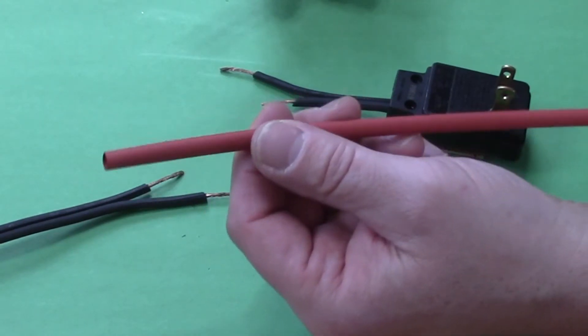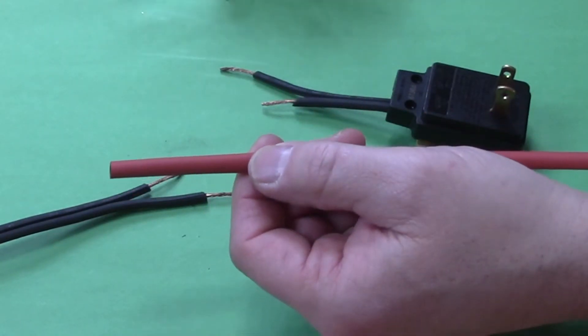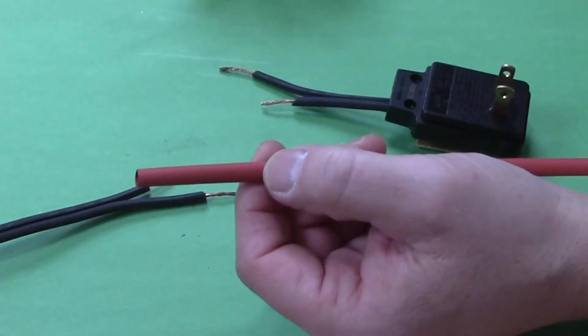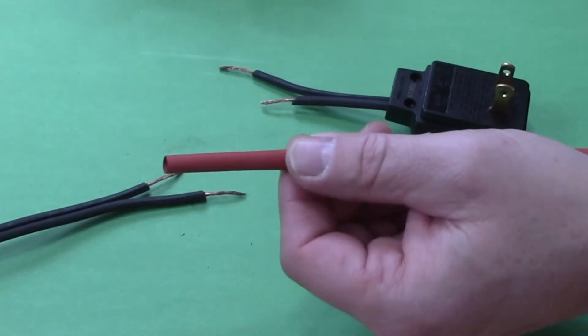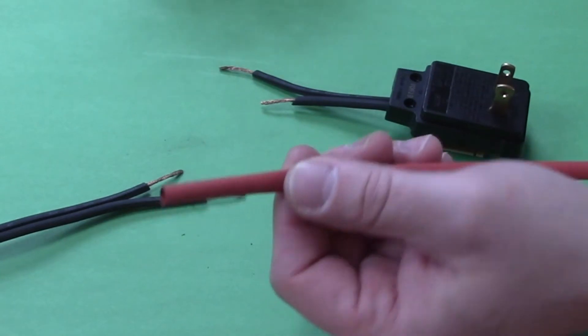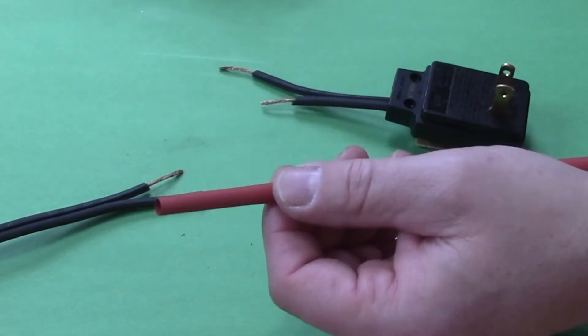I'm going to be using shrink wrap to cover up the wires once I put them back together. You can use electrical tape if you want. Just don't use cheap electrical tape. Get 3M or Scotch, something that's a higher quality so that it doesn't unravel.